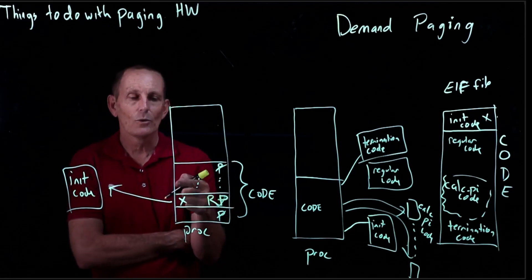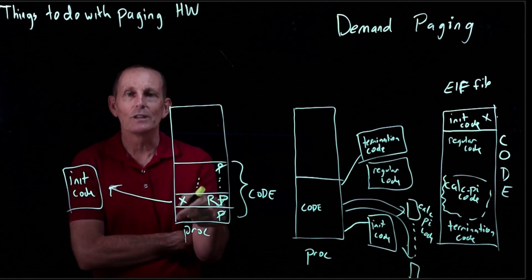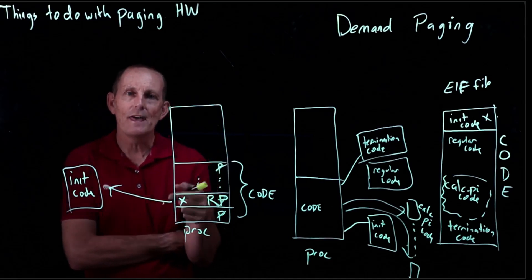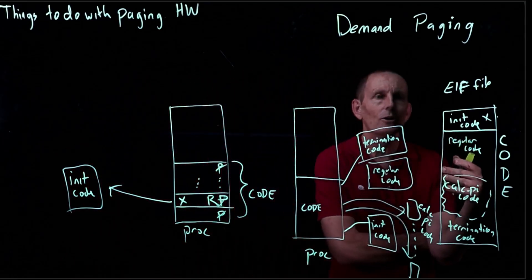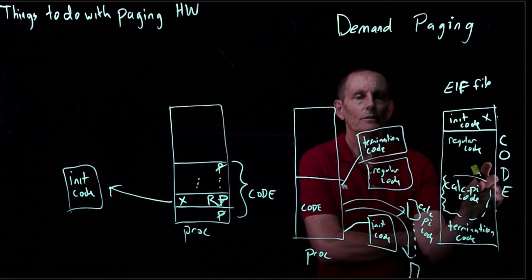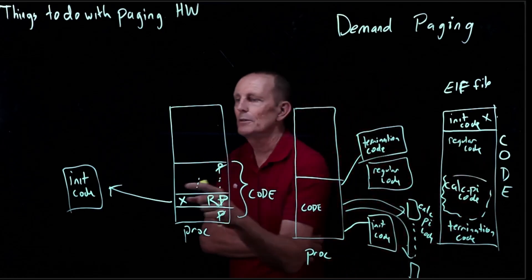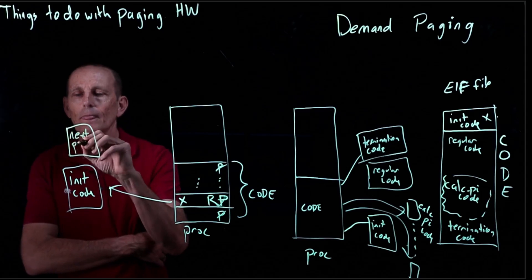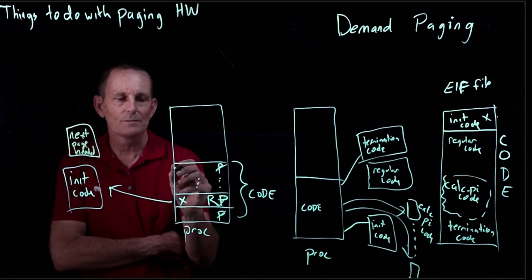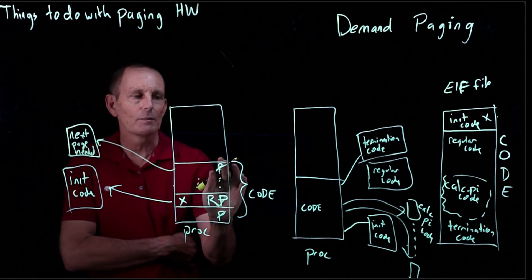It's running. Eventually it tries to access an instruction that's outside of this page. We get a page fault exception because they're not present. We go to the kernel. The kernel says, again, whatever this EIP is, I know the offset within the code. That tells me from the ELF file where I need to go, and I will go load that code from there.